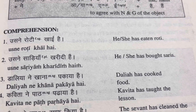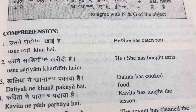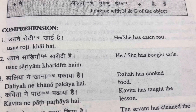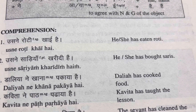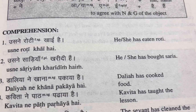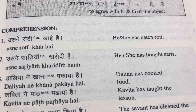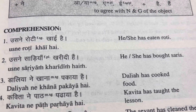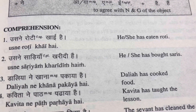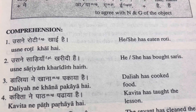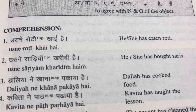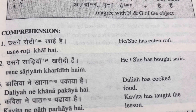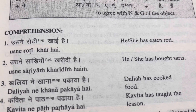Let's see another sentence. He or she has bought sarees. Usne saariyaan khari di hai. Same case — saariyaan is feminine plural, that's why we are saying khari di hai.